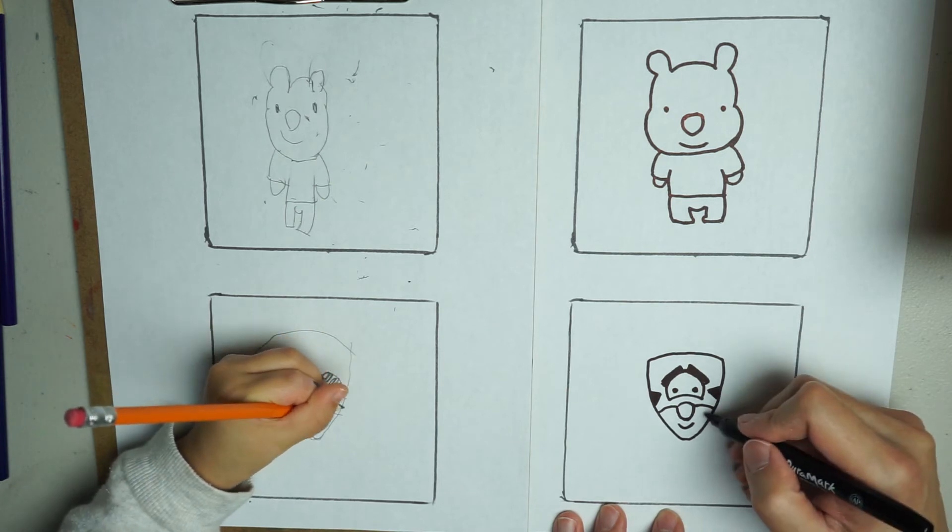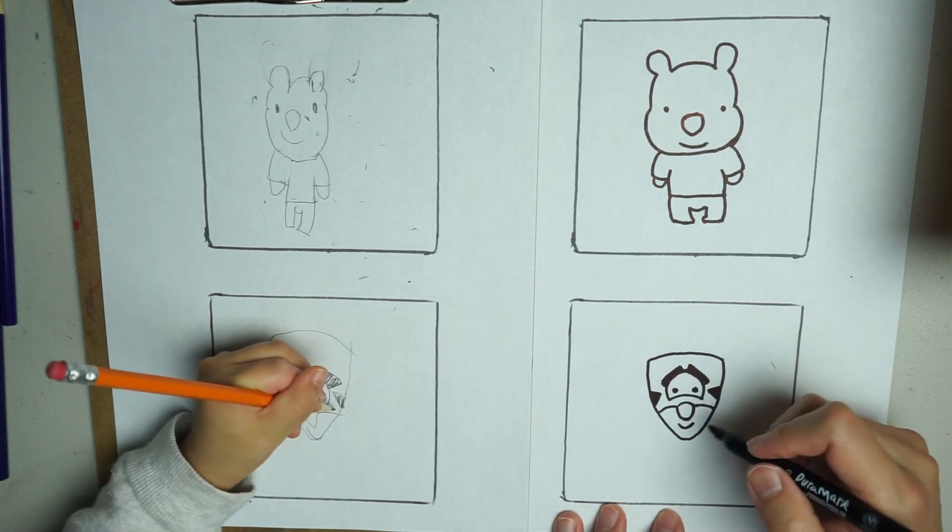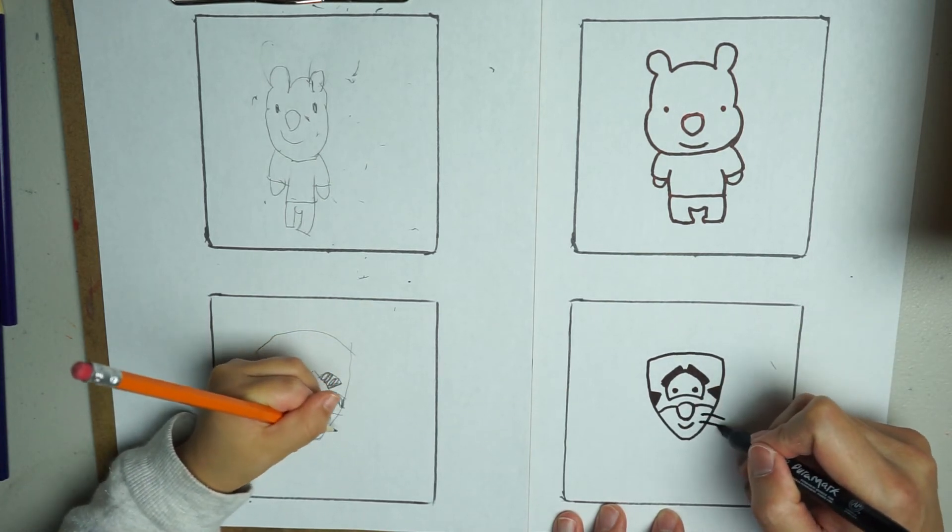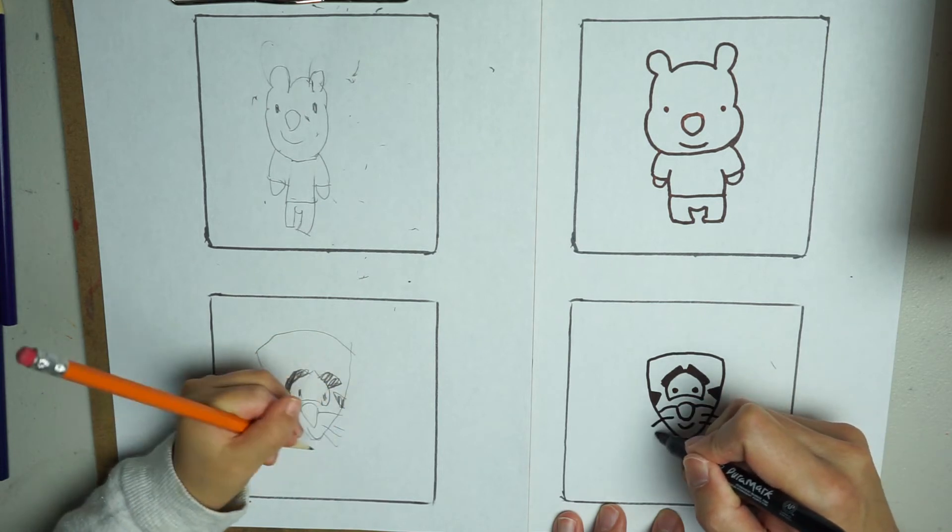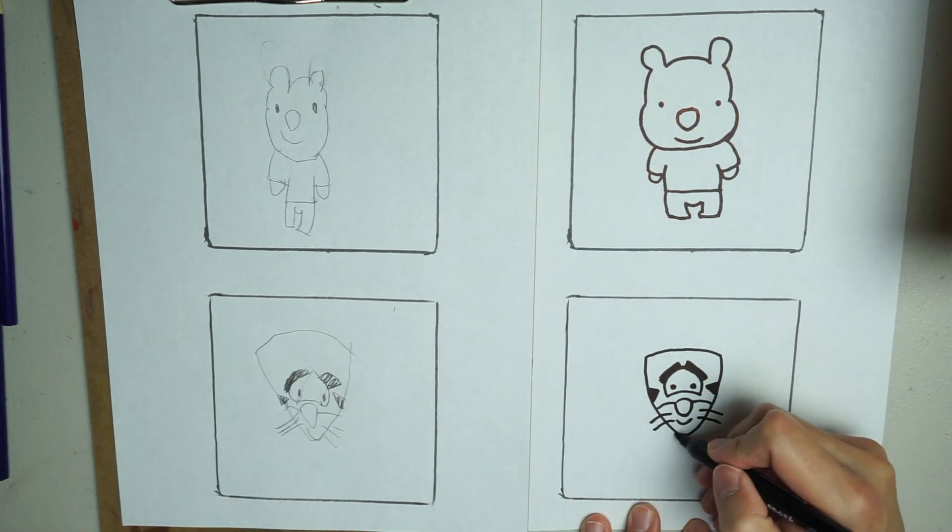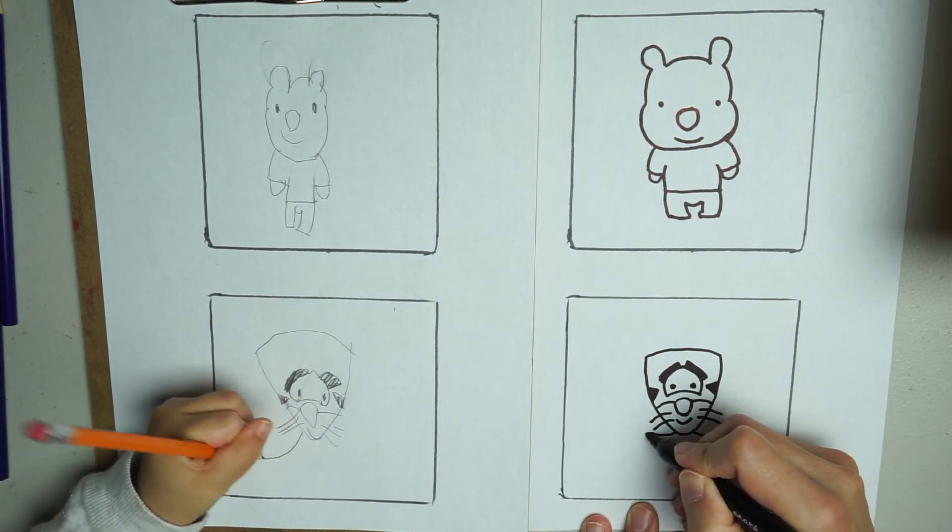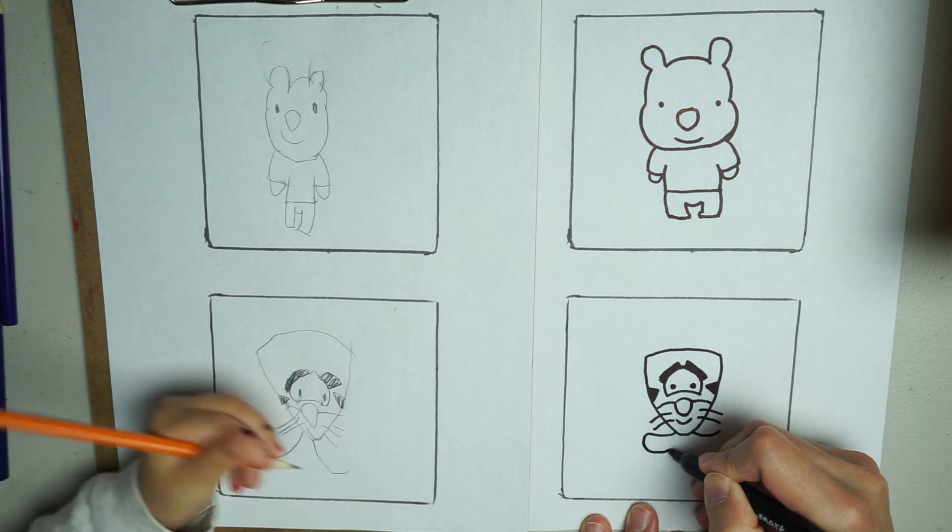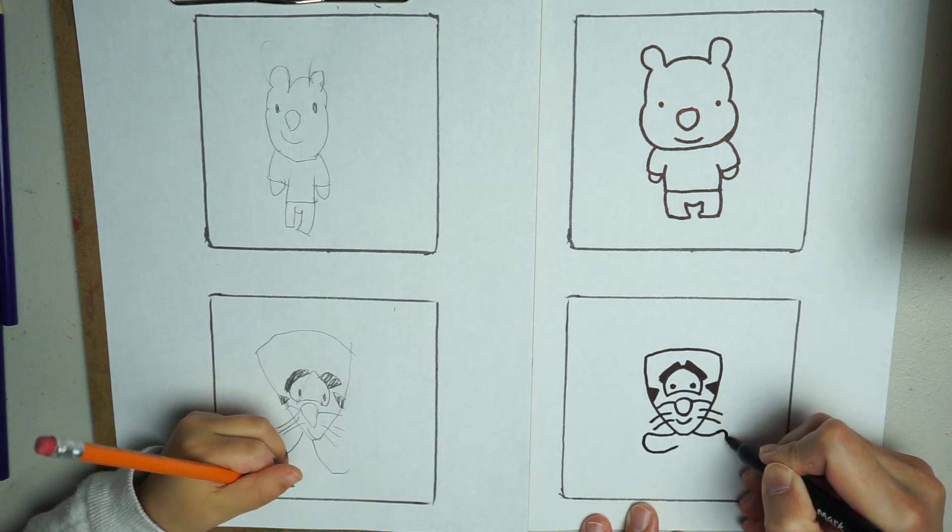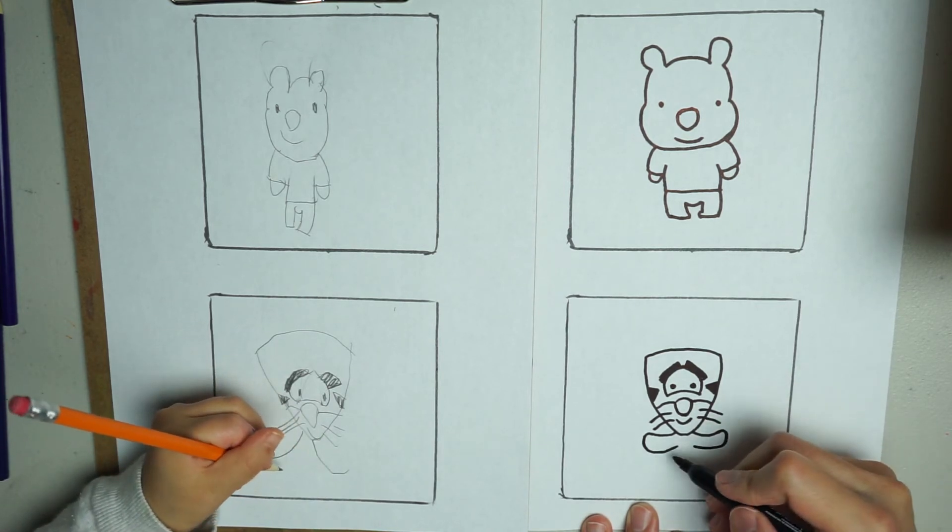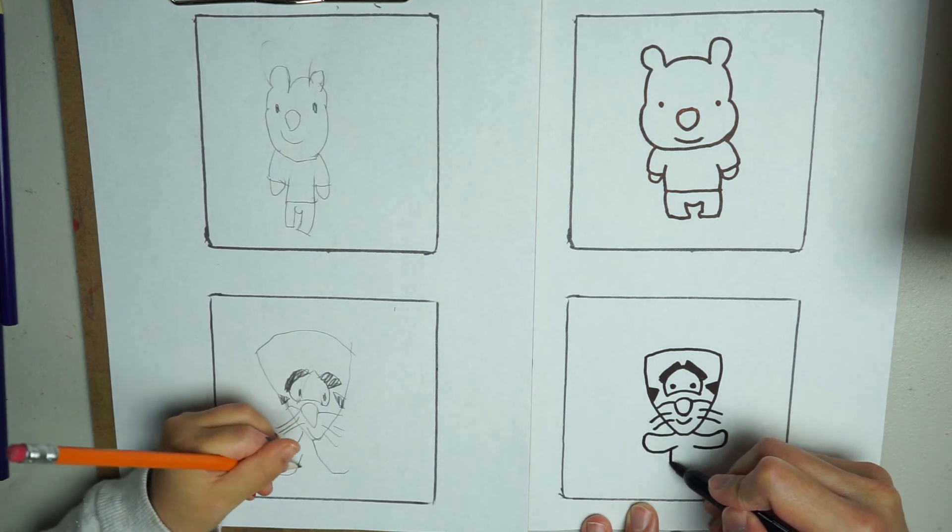I am going to add a couple of whiskers. I am going to draw his arms. His body is down here.